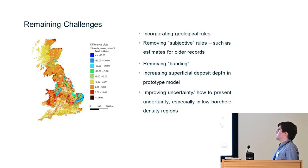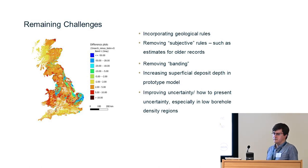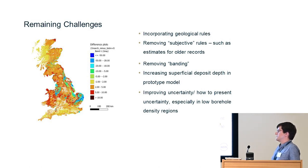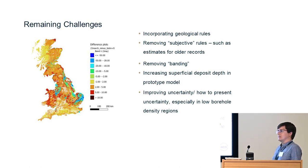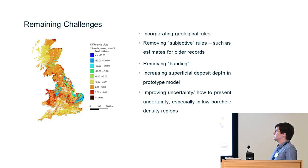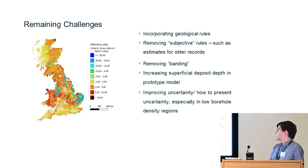Removing the banding by changing the DTM, and improving how to present uncertainty — especially in low borehole density regions — are also priorities. One potential option is to present a range of values on a map, saying a deposit is between 25 to 30 metres deep rather than giving a specific value. The alternative is to keep specific values but provide a separate uncertainty map alongside the Superficial Deposit Thickness Model.